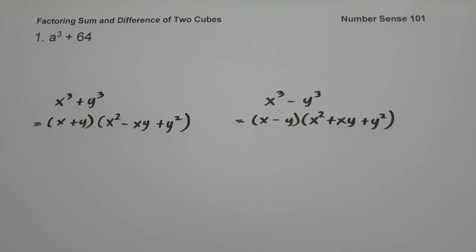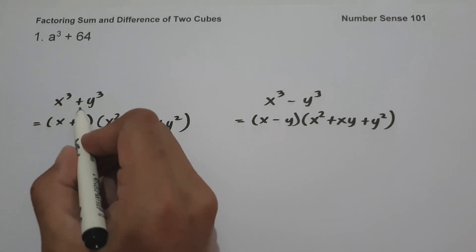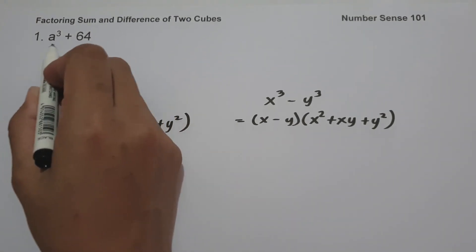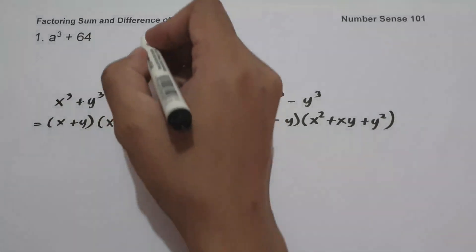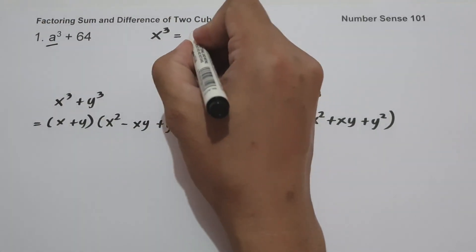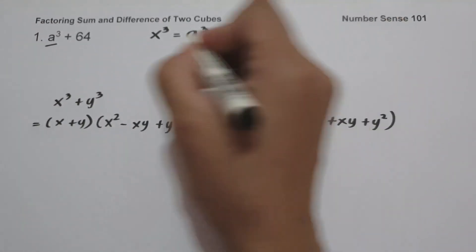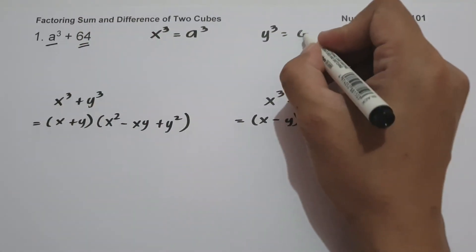Let's have the first example. On number one we have a³ + 64. As you can see, the given example is written in the form of the sum of two cubes, x³ + y³. So to find the factored form, let us identify the value of x³ — that is the first term, a³ — and y³ — that is the last term, 64.